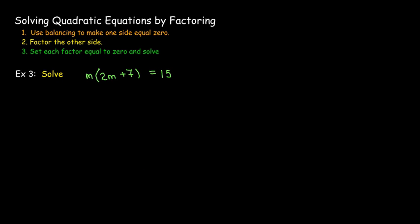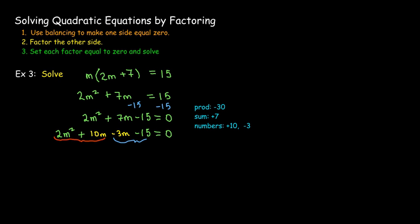So in this example, I'm going to have to start by actually using the distributive property and then subtracting 15 from each side. Now it equals zero. And now I have to factor. So in this case, I'll need two numbers which multiply to make negative 30 and add to make positive 7. That would be positive 10 and negative 3. So I'm going to replace the 7m with 10m minus 3m, and then factor by grouping.